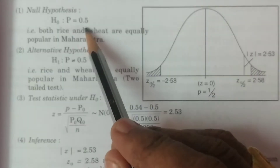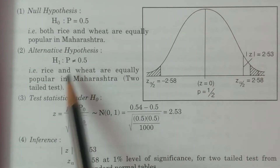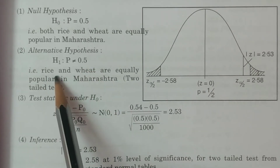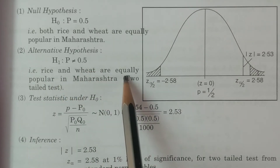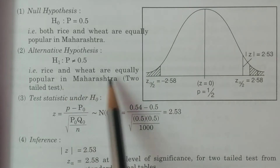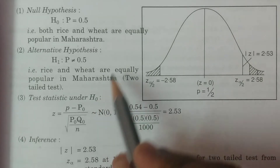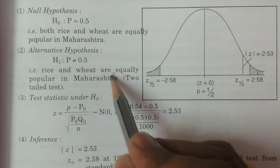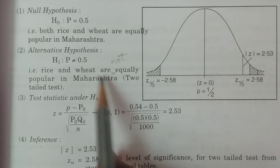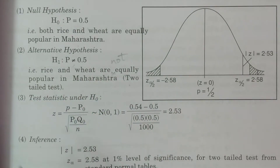The alternative hypothesis H1 is capital P not equal to 0.5, meaning rice and wheat are not equally popular in the state of Maharashtra. Since it is 'not equal to,' this is a two-tailed test.